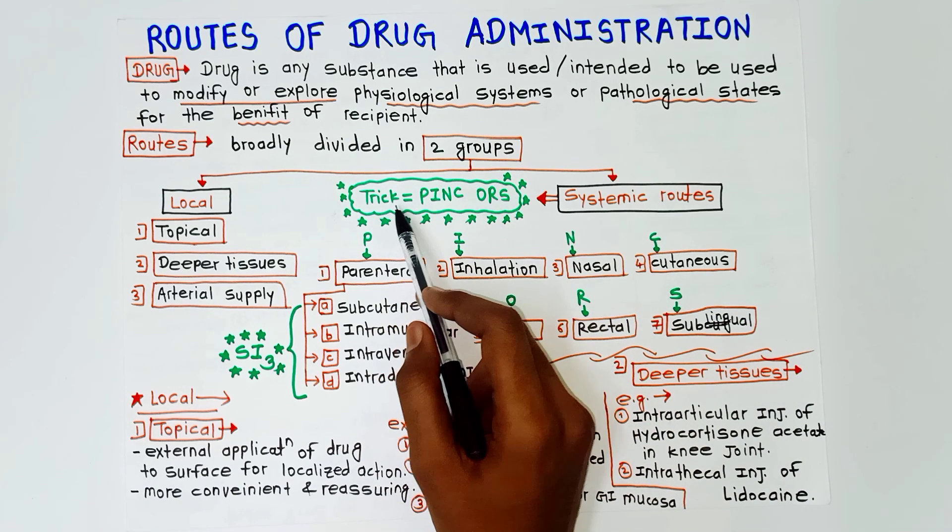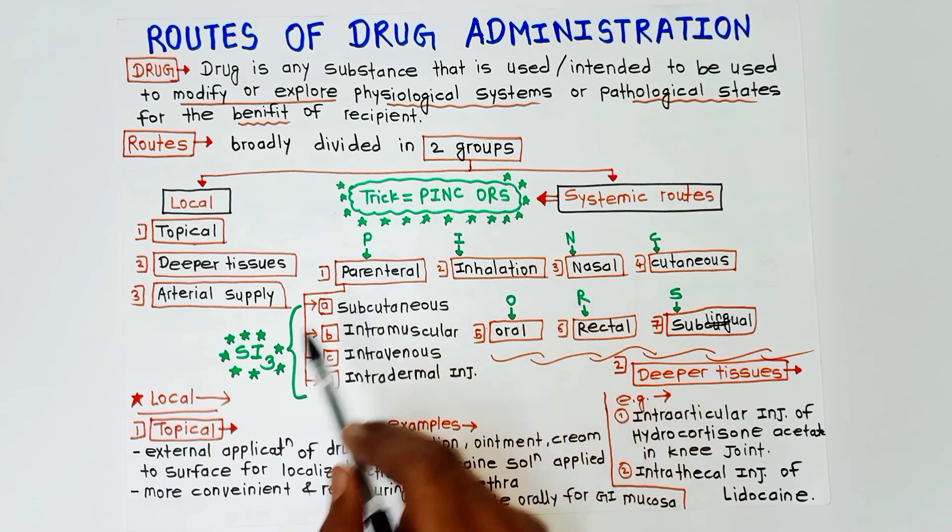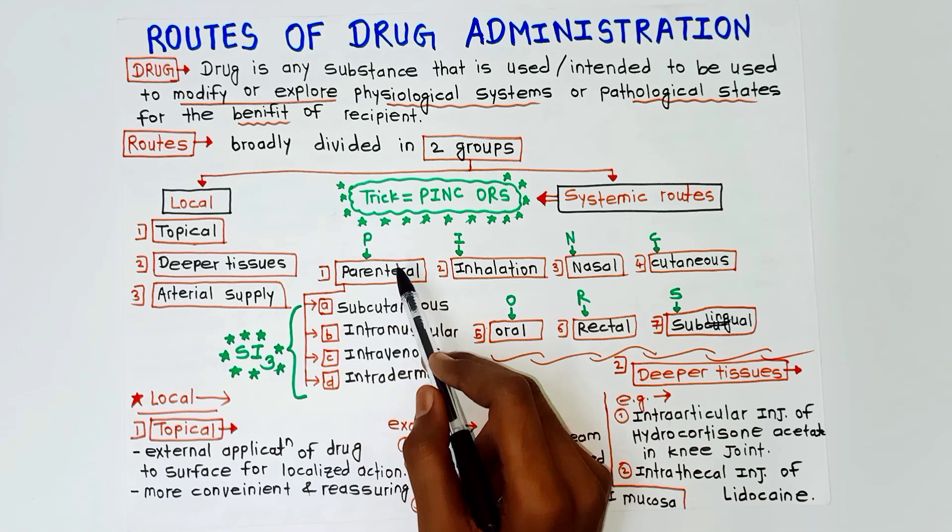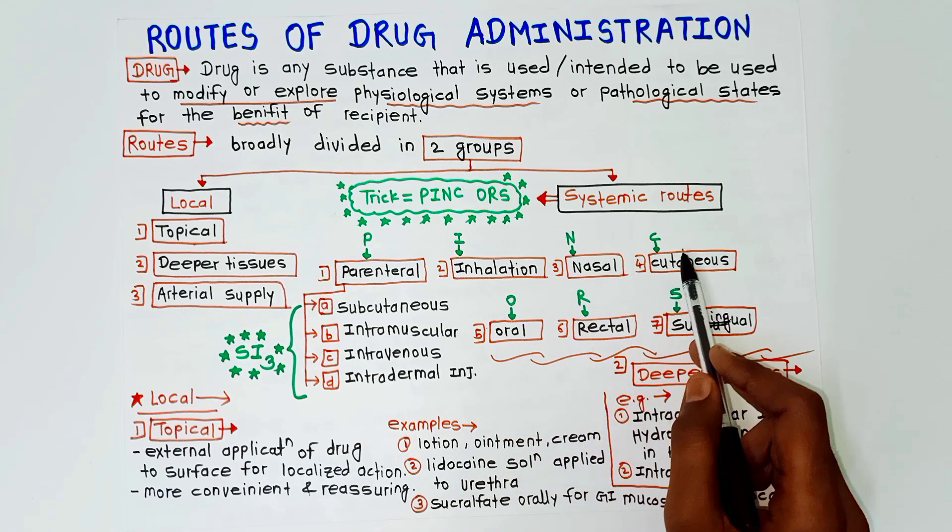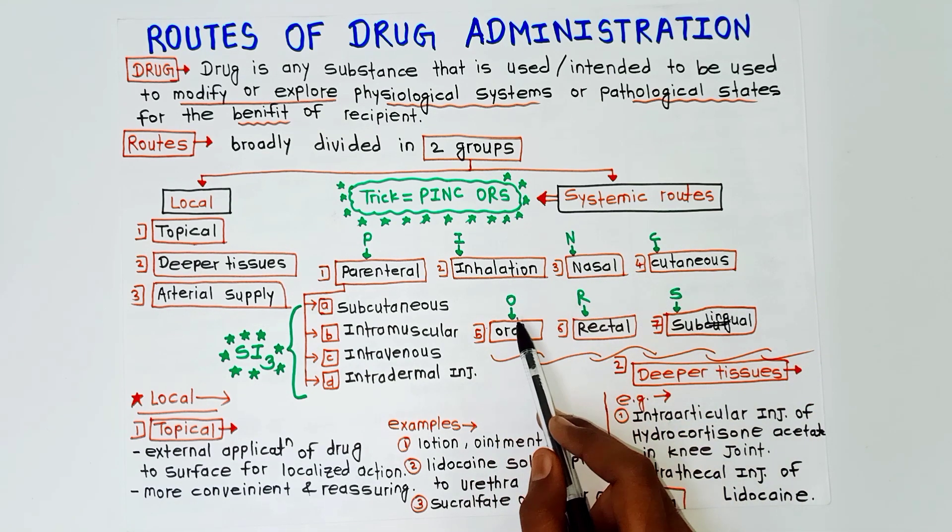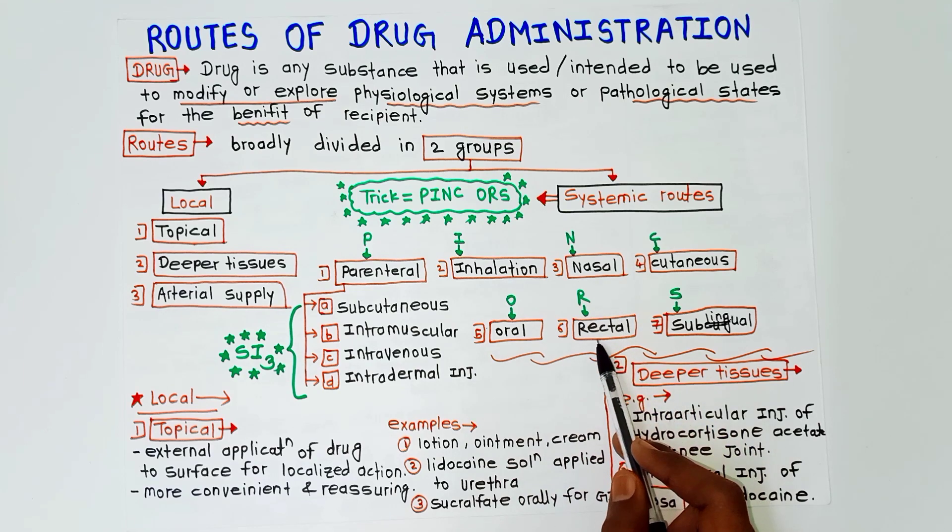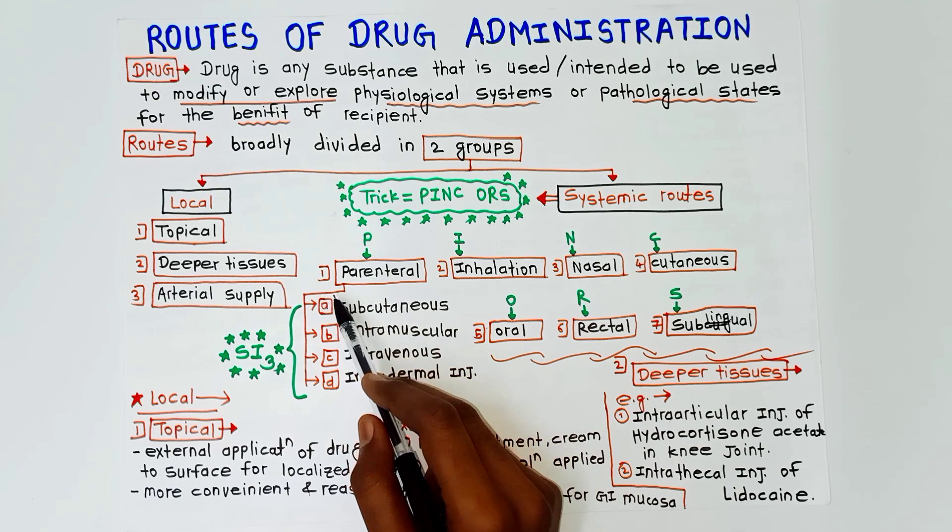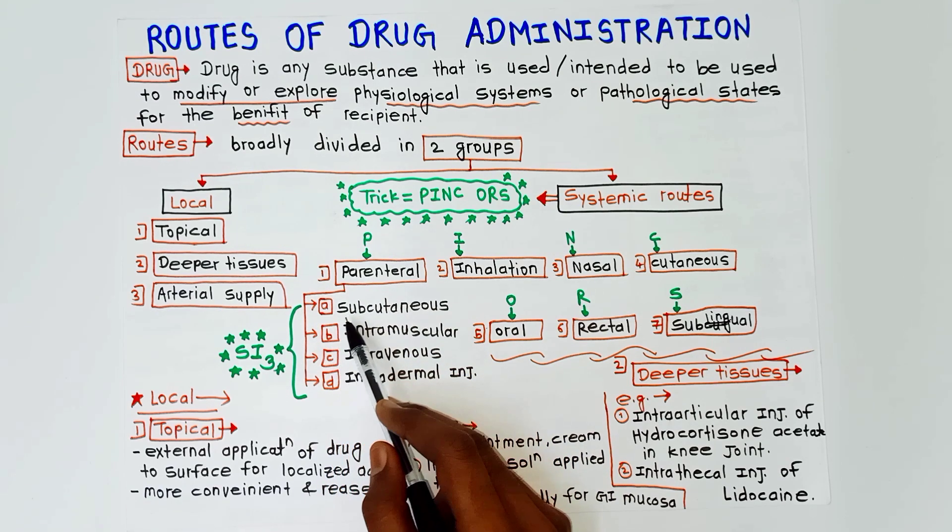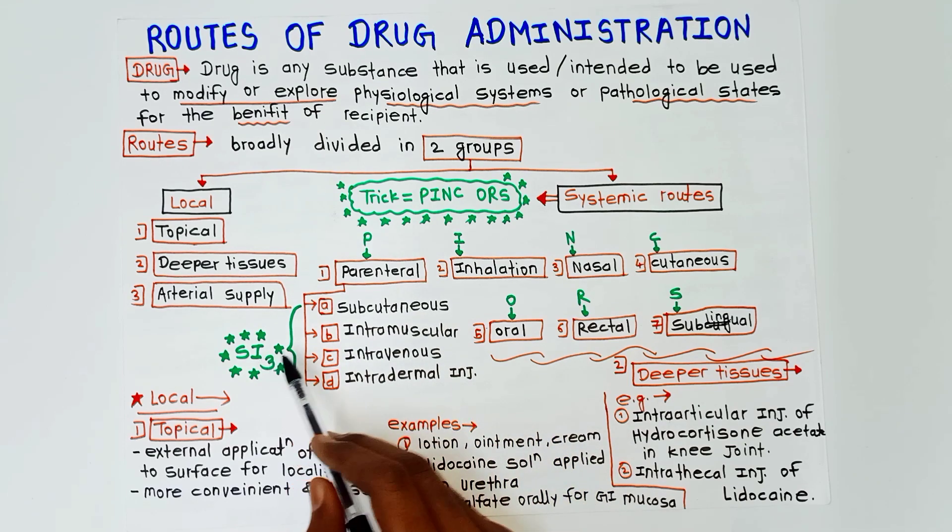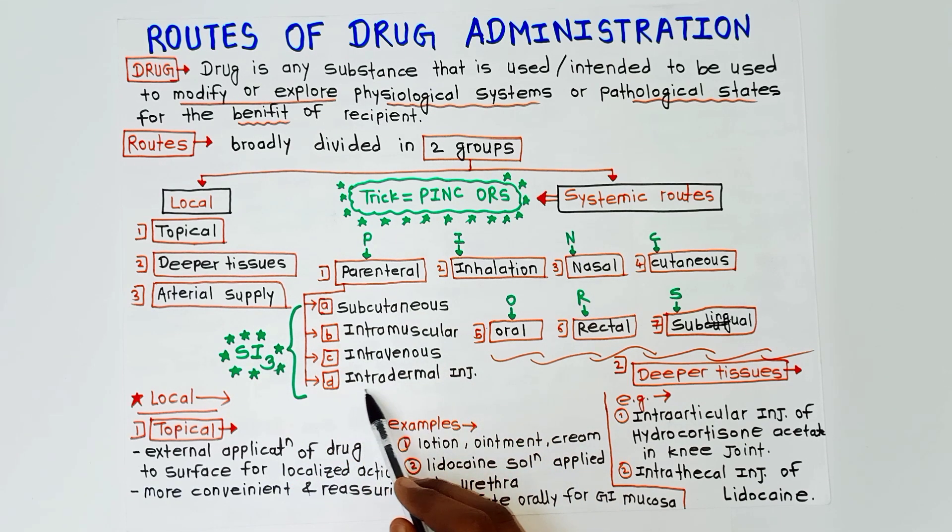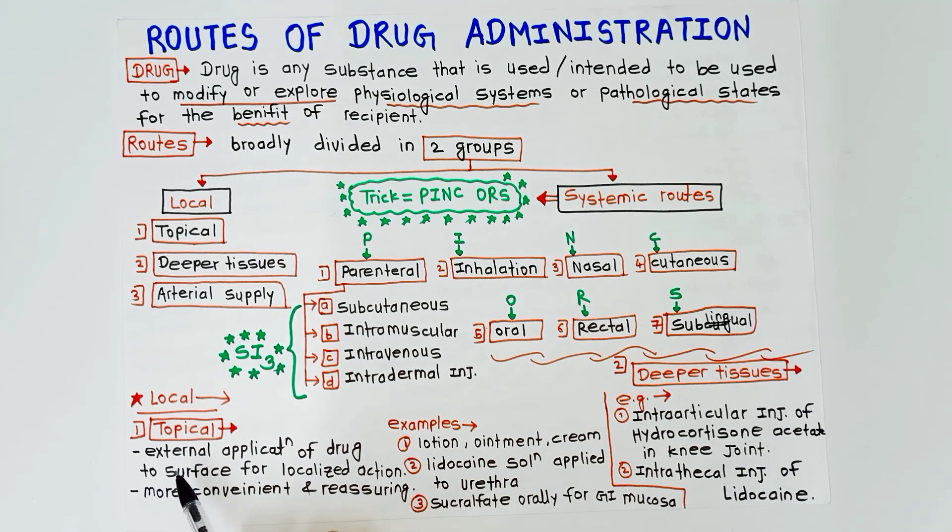Then systemic routes. The trick to remember systemic routes is PINK ORS SI3. P for parenteral, I for inhalation, N for nasal, K for cutaneous, O for oral, R for rectal, S for sublingual. And in parenteral there are four subgroups that are SI3: S for subcutaneous, first I for intramuscular, second I for intravenous, and third I for intradermal injection.